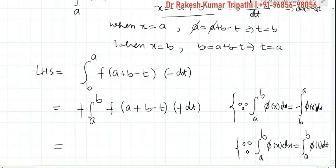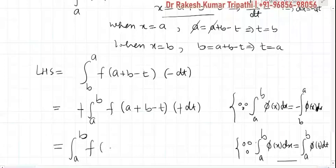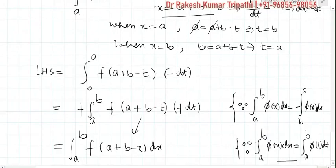This property tells us that definite integrals are independent of variables. So we can replace t with x in our expression, giving the integral of f(a + b − x) dx, using this property.